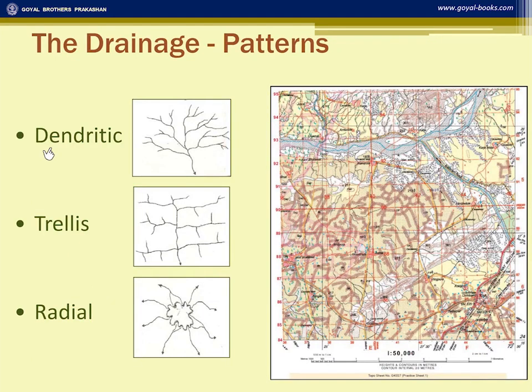In the dendritic pattern, the river and its tributaries make a pattern like the veins of a leaf, or we can say a branch of a tree. You can see an example in grid square 3894.